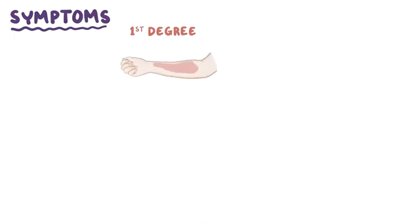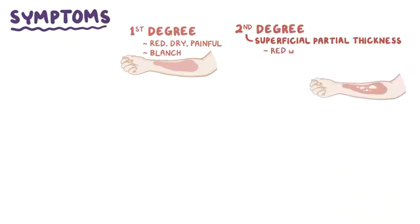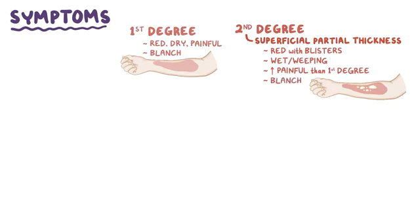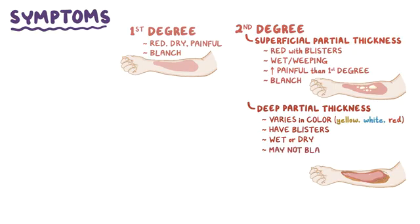Symptoms of a burn depend on the degree of the burn. In first degree burns, the affected area becomes red, dry, and painful. These areas also tend to blanch, turning white as blood flow is restricted with compression. Second degree superficial partial thickness burns can be red with clear blisters, wet as if weeping, and are even more painful than first degree burns, but still blanch. A second degree deep partial thickness burn may vary in color from yellow or white to red, have blisters, and can be wet or dry. Because of damage to blood vessels and nerve endings, burns of this degree may not blanch, and there may only be pain due to pressure because of nerve damage.